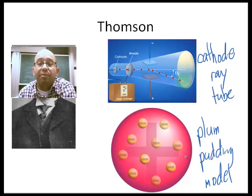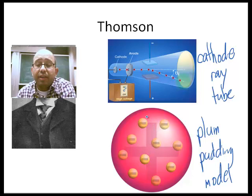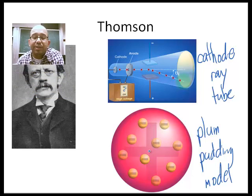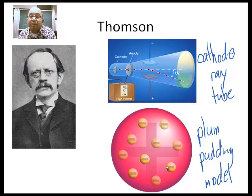Now, the reason why this is called the plum pudding model is that in England, and that's where he was from, he was from England. They used to eat this thing called plum pudding. It was basically like pudding that you'd buy at the store except it had plum pieces in it. So that's why it's called the plum pudding model. These minus pieces are the little pieces of plum that were in the pudding.